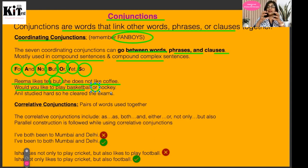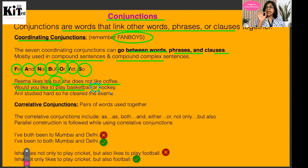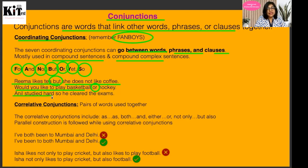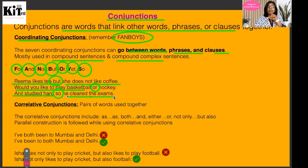'Or' is connecting both parts of the sentence. Two parts of the sentence are made simpler by connecting them with the conjunction 'or.' Another example: 'Anil studied hard, so he cleared the exams.' Both parts are equally important — 'Anil studied hard' and 'so he cleared the exams.' This is coordination.